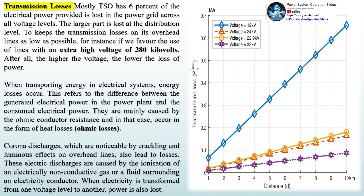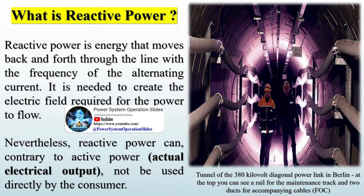Transmission losses: most TSOs worldwide see around 6% of the electrical power provided lost in the power grid across all voltage levels, with the larger part lost at the distribution level. To keep transmission losses as low as possible, operators favor the use of lines with an extra-high voltage of 380 kV. After all, the higher the voltage, the lower the loss of power. When transporting energy in electrical systems, energy losses occur — this refers to the difference between the generated electrical power in the power plant and the consumed electrical power. They are mainly caused by ohmic conductor resistance, occurring in the form of heat losses. Reactive power is energy that moves back and forth through the line with the frequency of the alternating current; it is needed to create the electric field required for power to flow, but contrary to active power, cannot be used directly by the consumer.